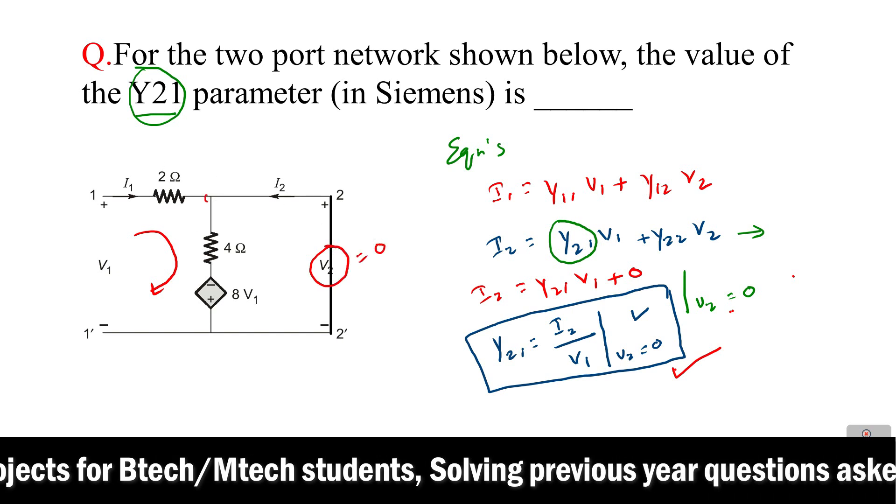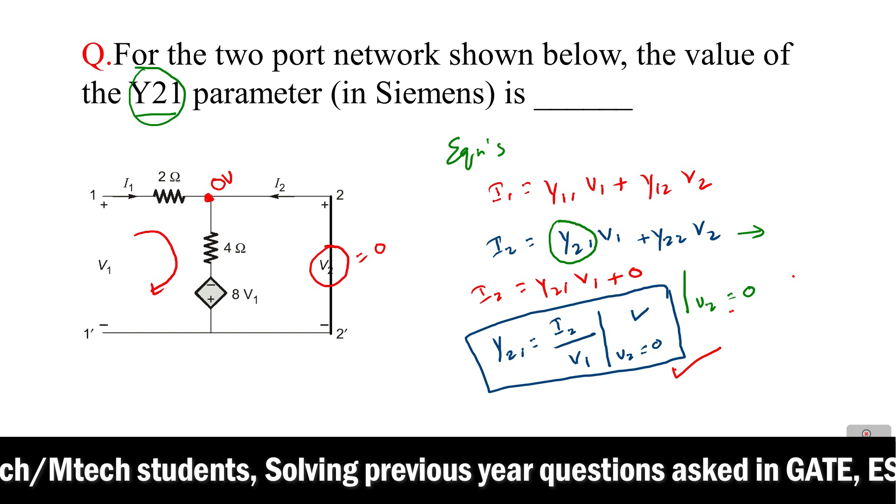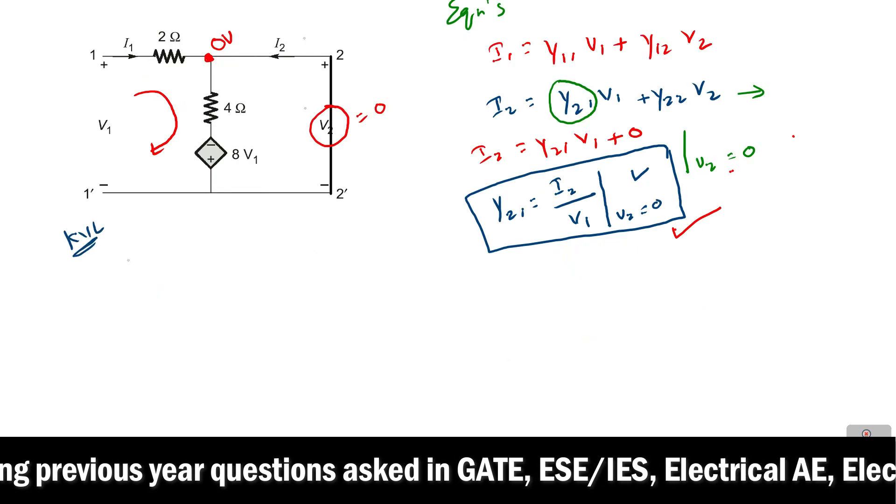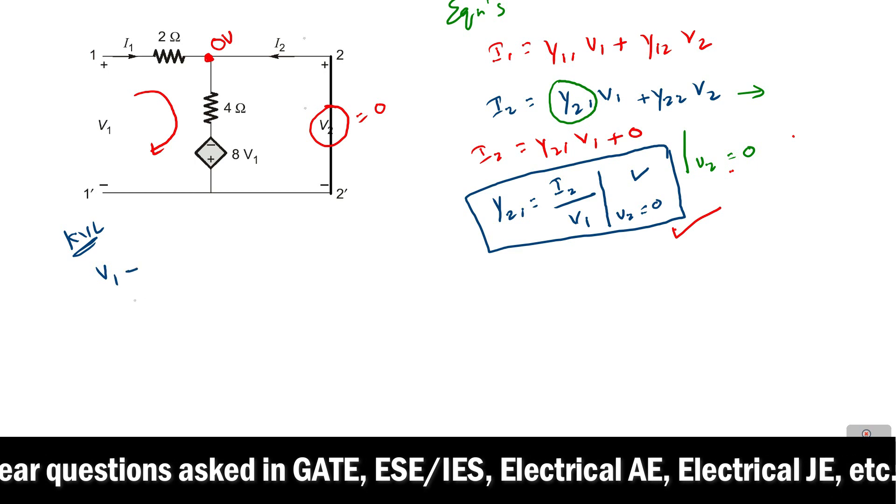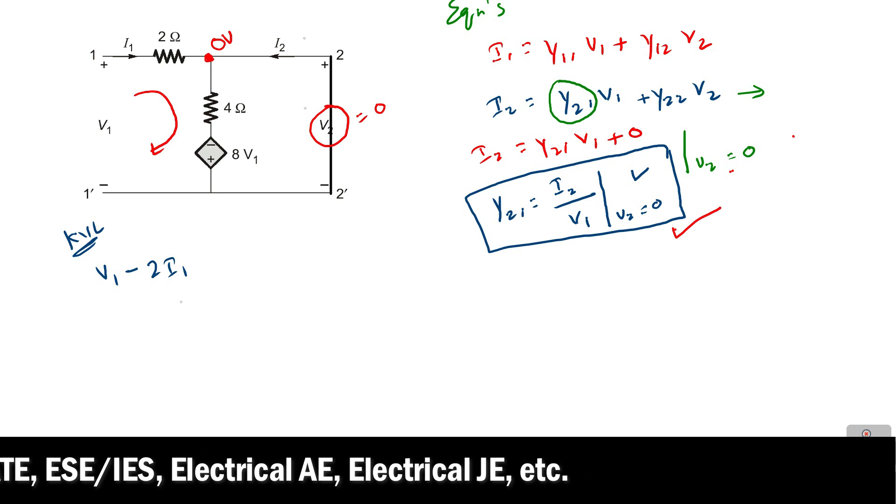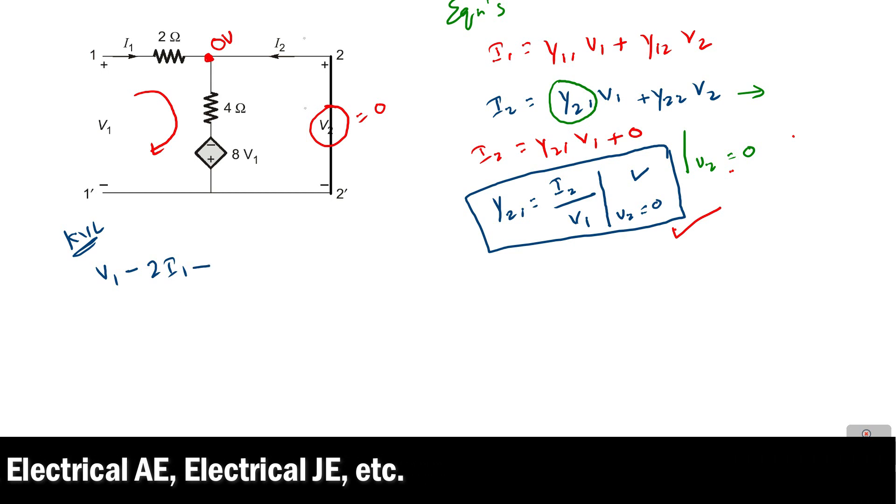Just remember here v2 is 0, so that's why the potential at here also is 0 volts. So if you apply the KVL for the above loop, you will get the equation like v1 minus voltage across 2 ohm resistor, 2 into i1, minus voltage across this 4 ohm resistor.